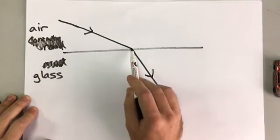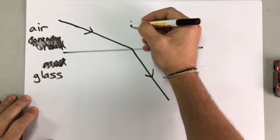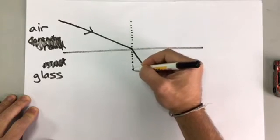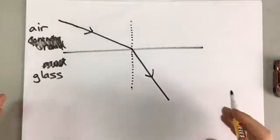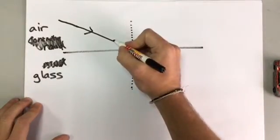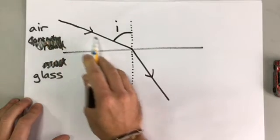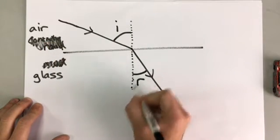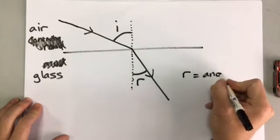It changes direction because the light is going slower in the glass. We can add a normal to that diagram. So, just like we did with reflection, we can have an angle of incidence — the light is coming in. And here, instead of an angle of reflection, we still have R, but the R is the angle of refraction.